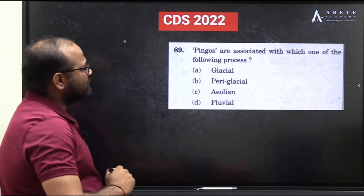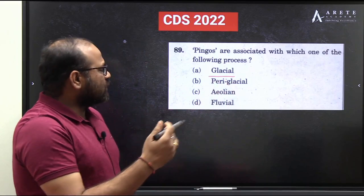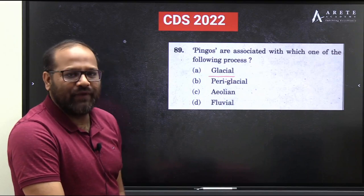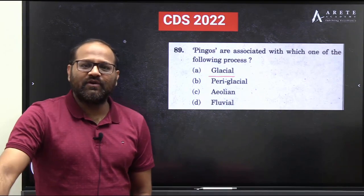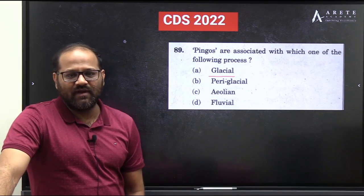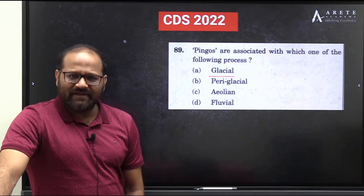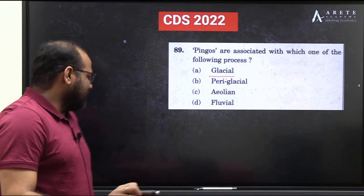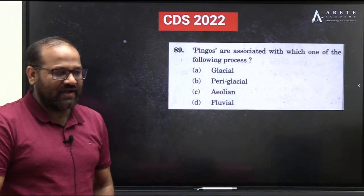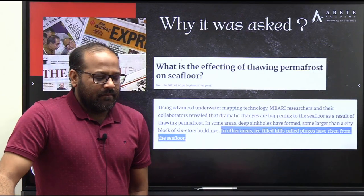The question is: pingos are associated with which one of the following processes? The options are: glacial, periglacial, aeolian, or fluvial. Let me know your answer — it will be interesting to see your responses. Do participate, it is fun! Take your stand and choose your answer while we discuss.